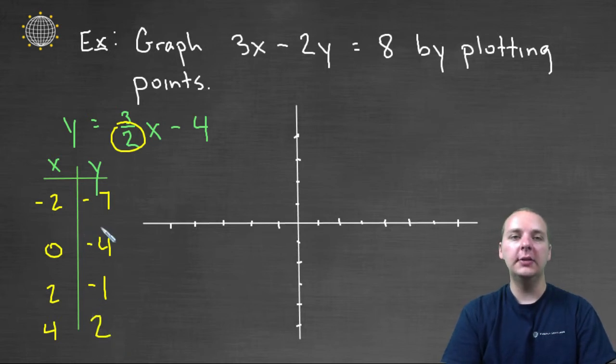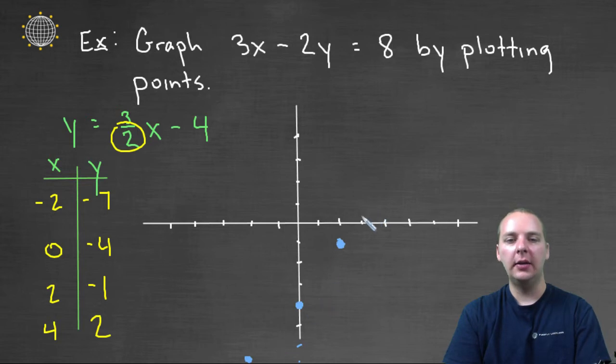So these are a few points that are on the graph of this linear equation. These are all x, y ordered pairs that we can plot. So let's do that next. Let's plot all these points. Here we've got negative 2, comma, negative 7. This is almost going off my screen. And then 0, comma, negative 4. Then we'll get 2, comma, negative 1. And you see these are starting to line up in a straight line. And last one, 4, comma, 2. Somewhere right about here.